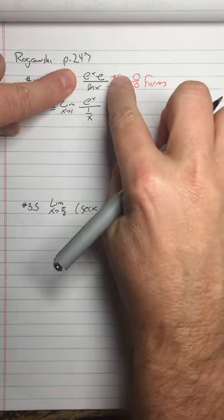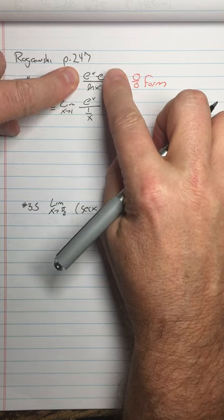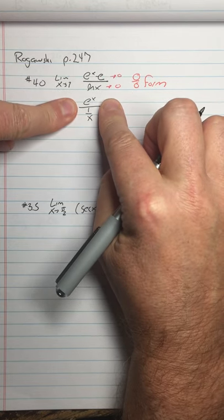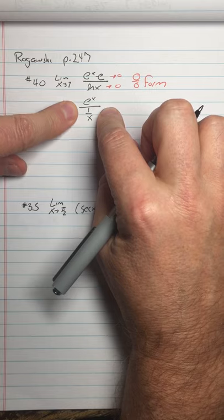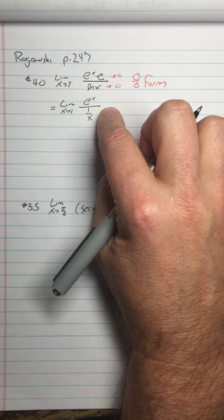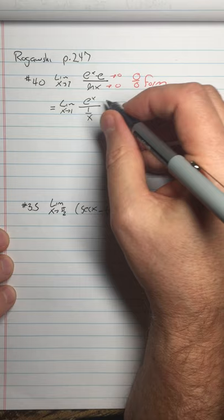It should be pretty clear, by the way, that e to the x minus e over ln x is not the same as e to the x over 1 over x. These two are not the same. Their limits are the same. That's all L'Hôpital's rule says.